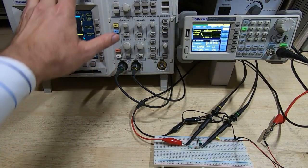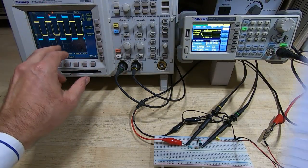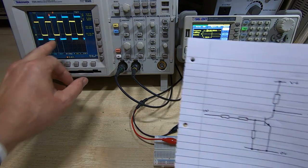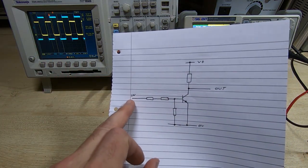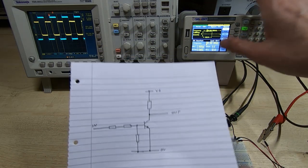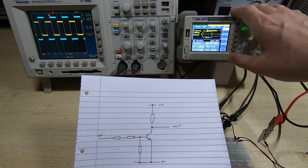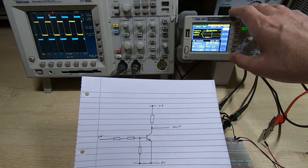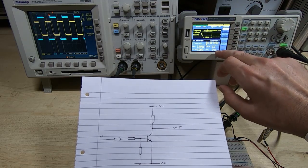The scope is hooked up so that the blue trace is the input signal, and that's been fed from the signal generator. The signal generator is set to give two volts peak to peak, and it's a 50 ohm source load, so this is giving a fairly squared-off square wave input to the circuit.